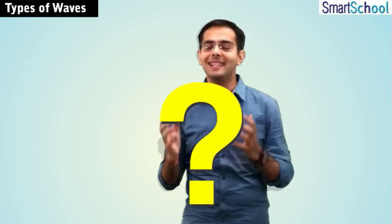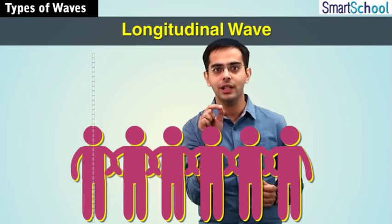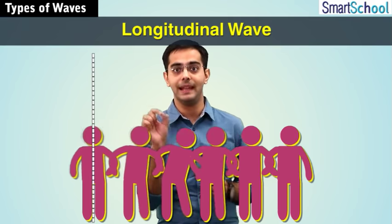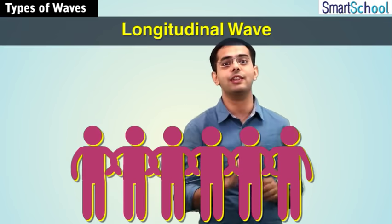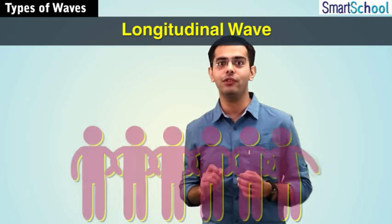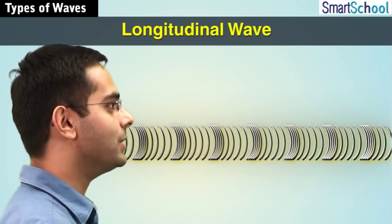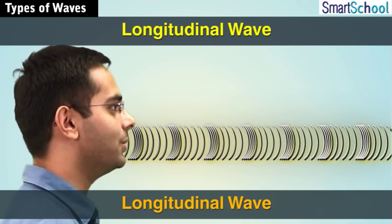This presents the second kind of wave, known as the longitudinal wave, in which the particles of the medium undergo back-and-forth motion about their mean position, and this motion is parallel to the direction of propagation of the wave. An example of a longitudinal wave is sound waves — the sound wave emitted from my mouth as I speak is an example of a longitudinal wave.